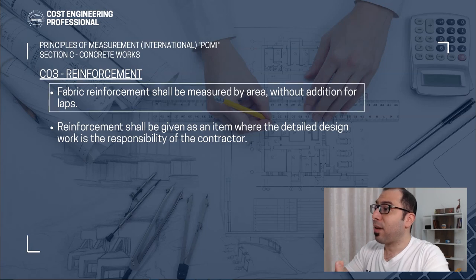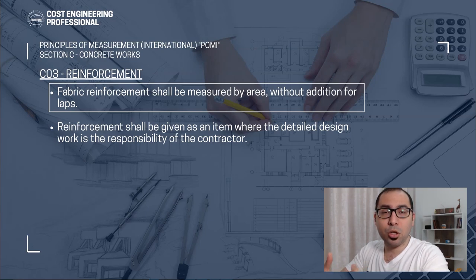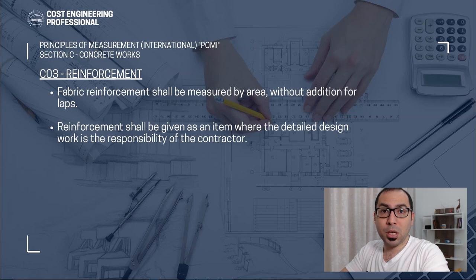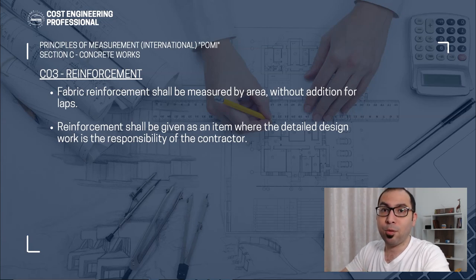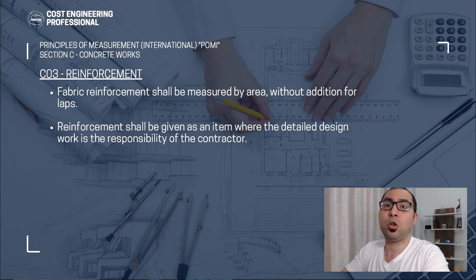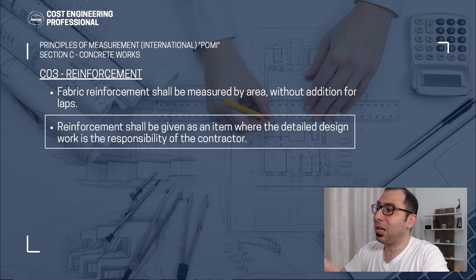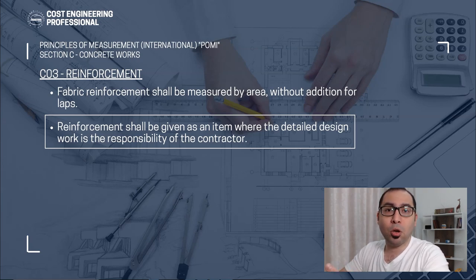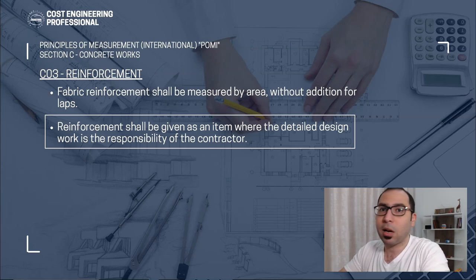Fabric reinforcement such as BRC mesh, commonly used in slab on grade, shall be measured by area without addition for laps. You measure the exact area of the slab and that is your BOQ quantity in square meters. Where the detailed design is the responsibility of the contractor, such as in a design-and-build contract, reinforcement shall be given as an item only in the BOQ, since the quantity cannot yet be measured.